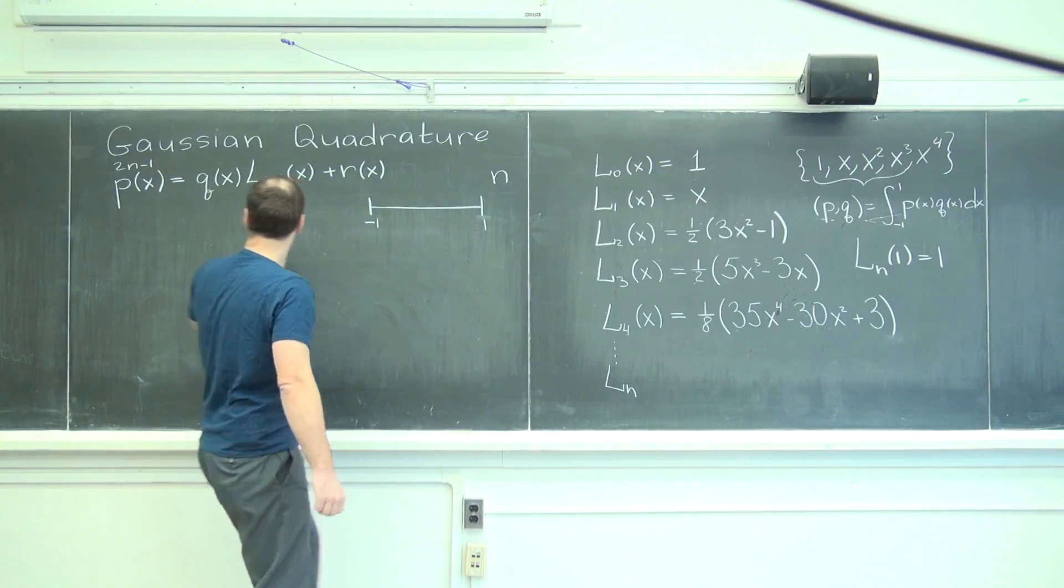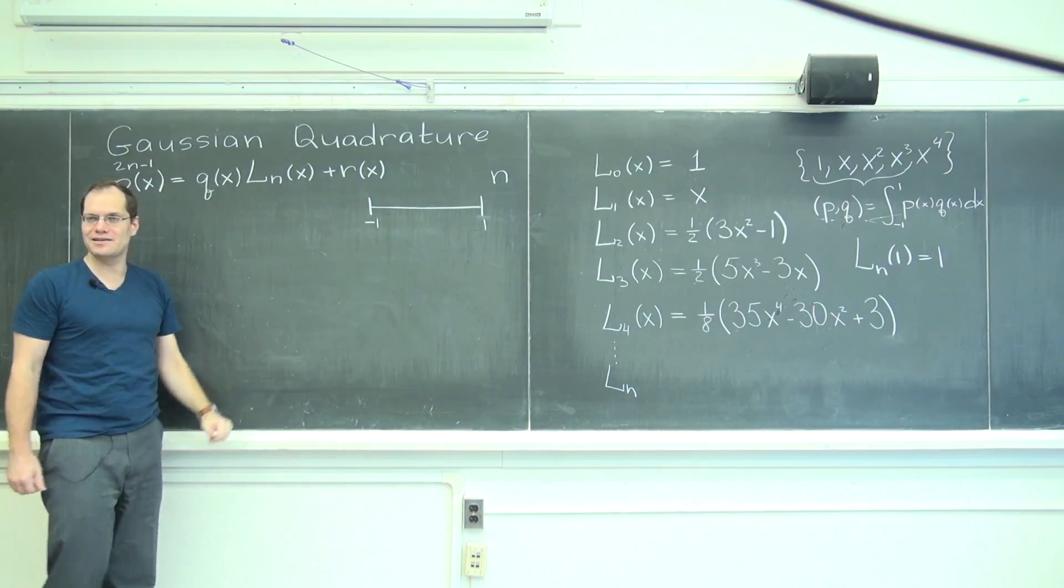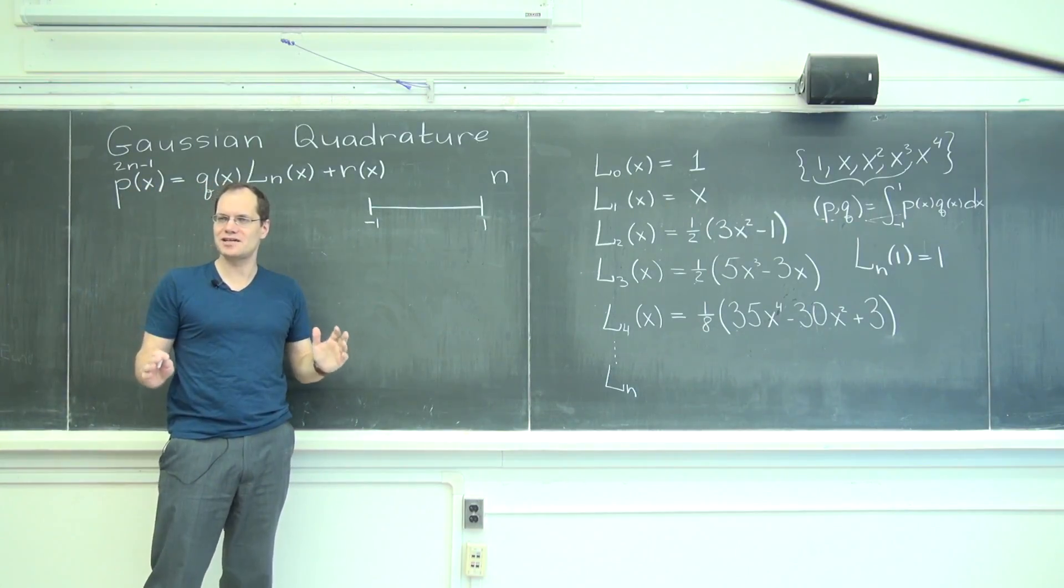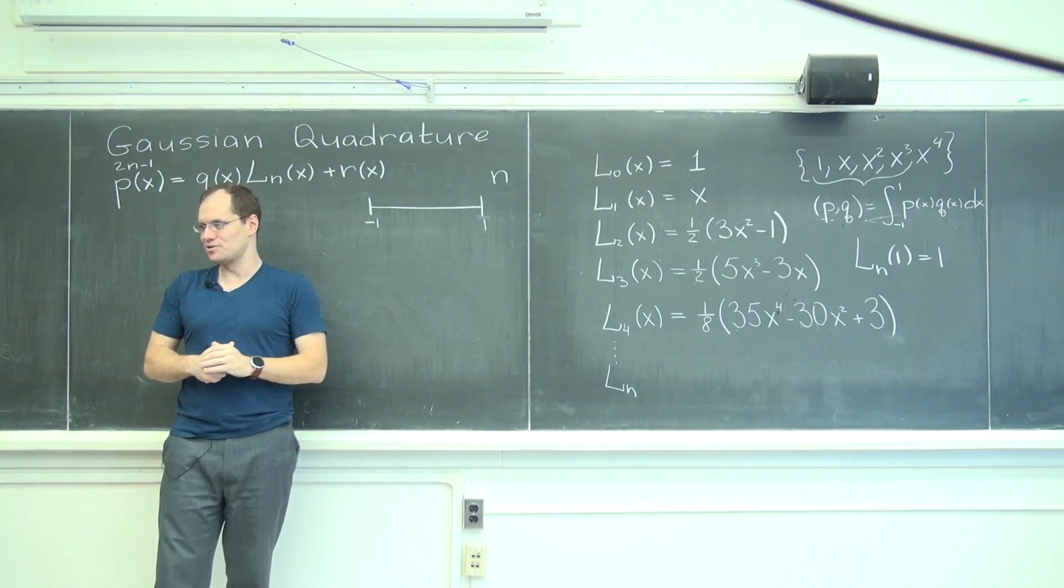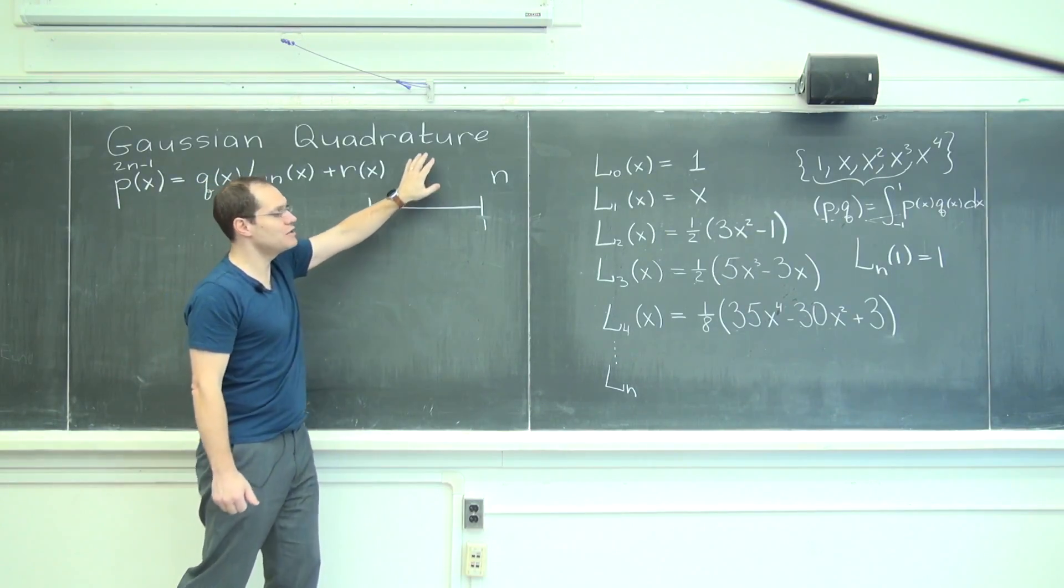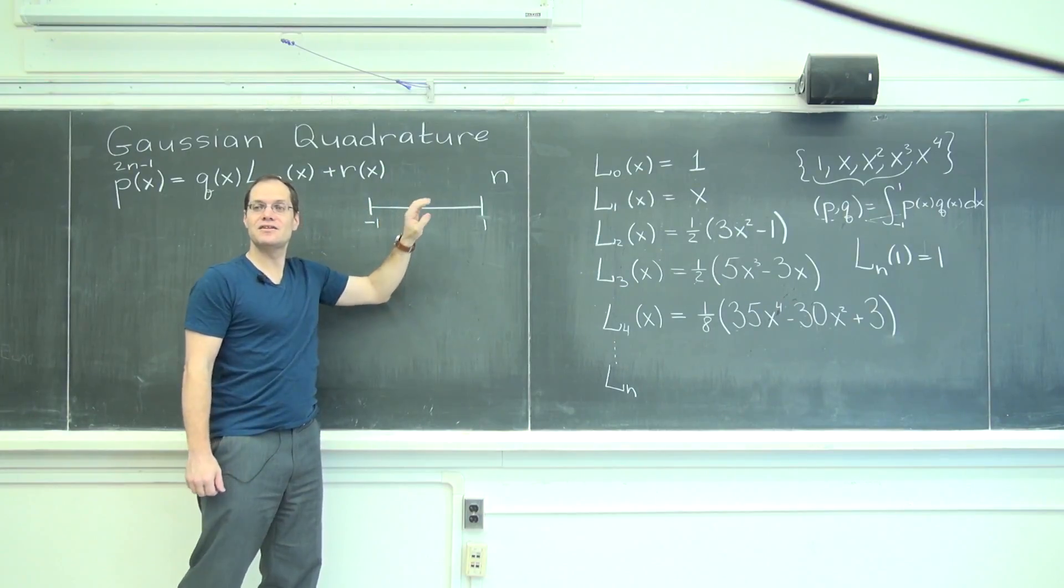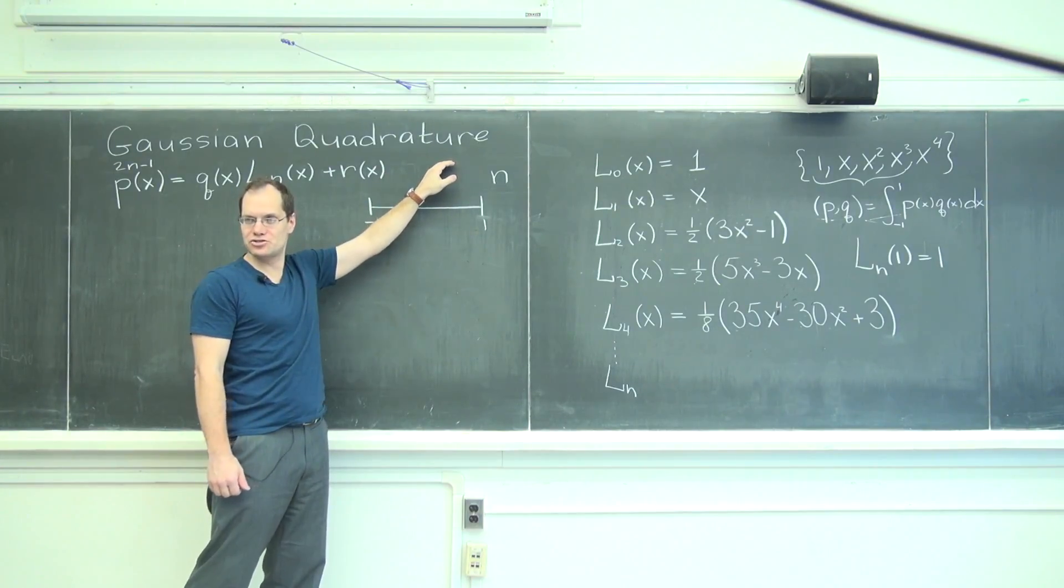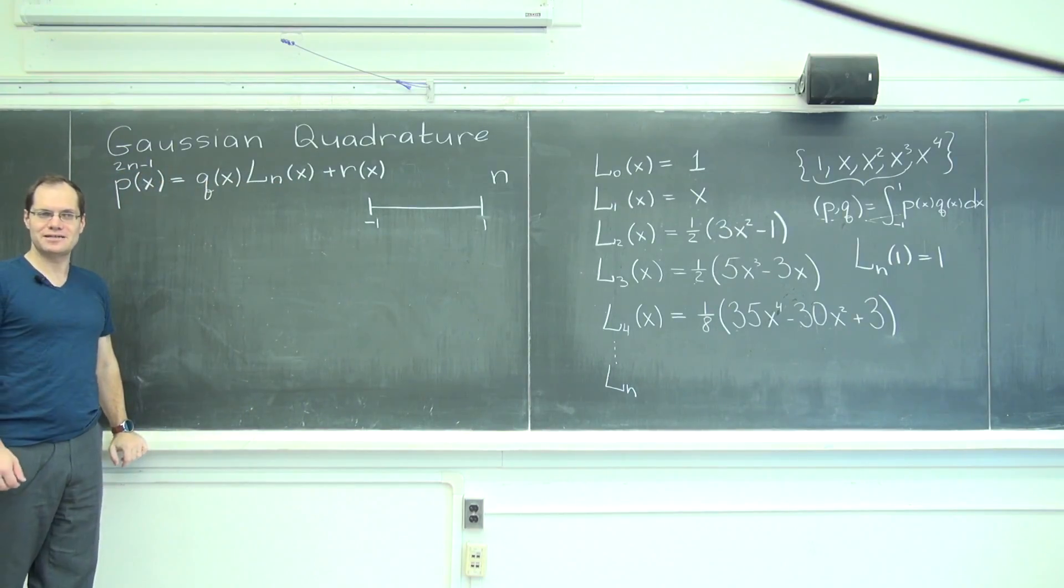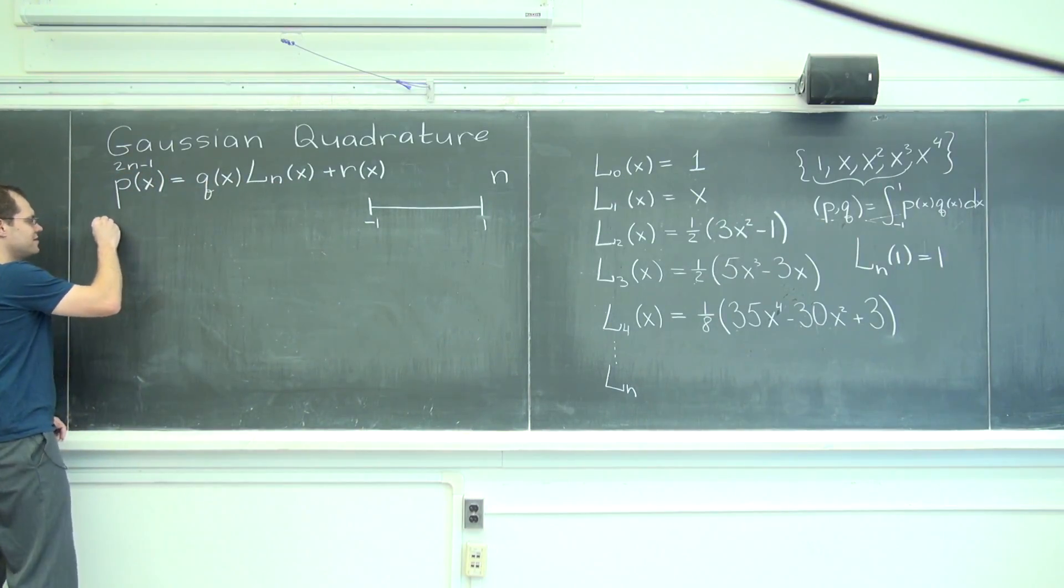Okay, so I can always do that with any polynomial. Now let me integrate both sides, and we will first discover what the true integral is. Because we want to find points and weights such that the approximate integral equals the true integral for degree up to 2n minus 1. So let's evaluate the integral.